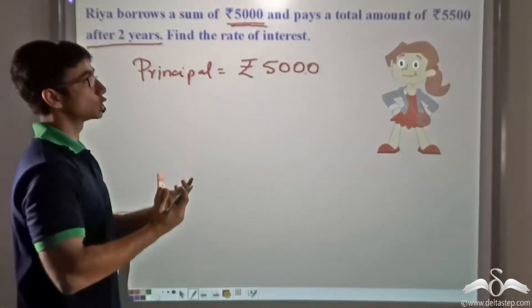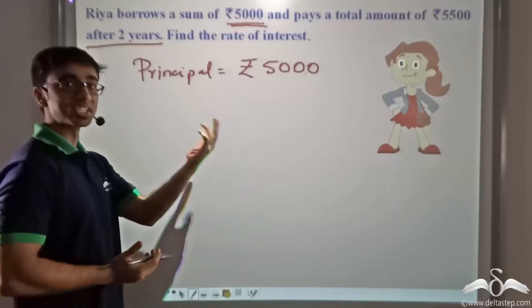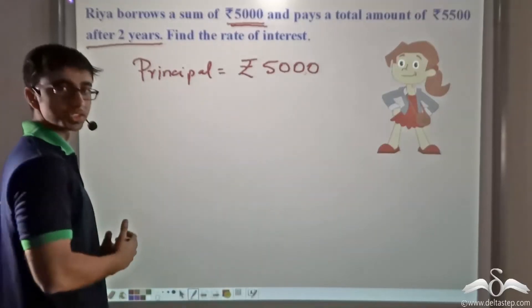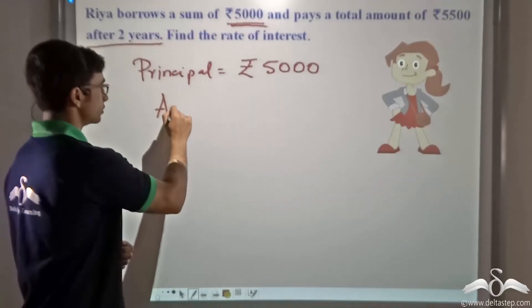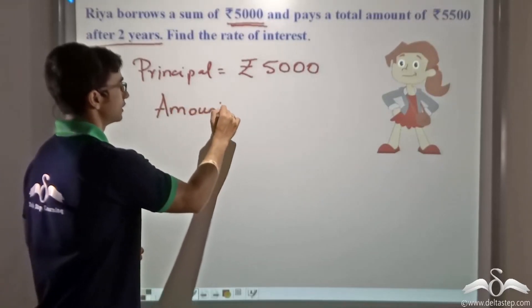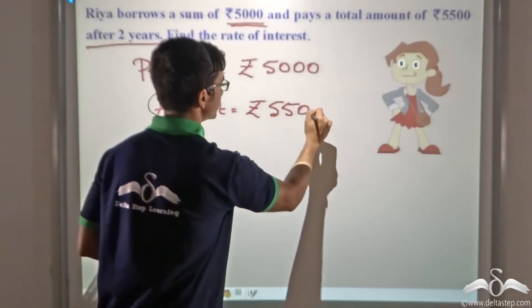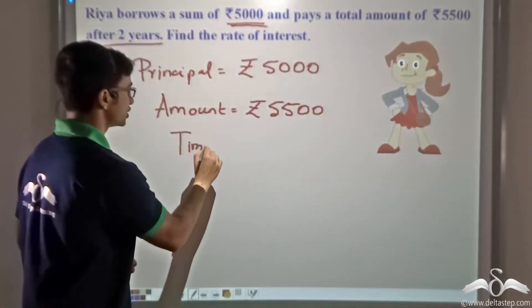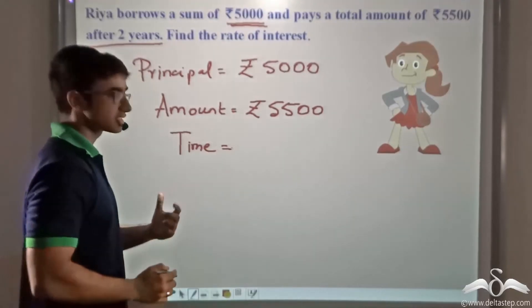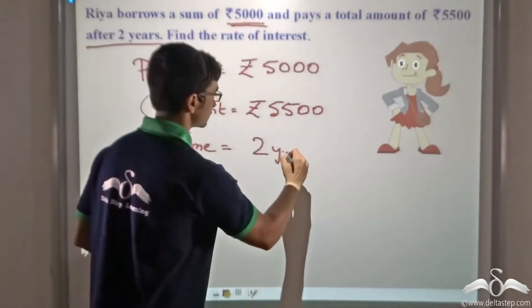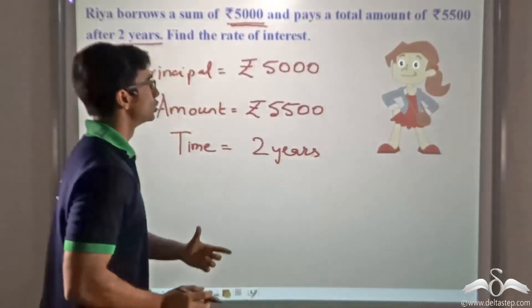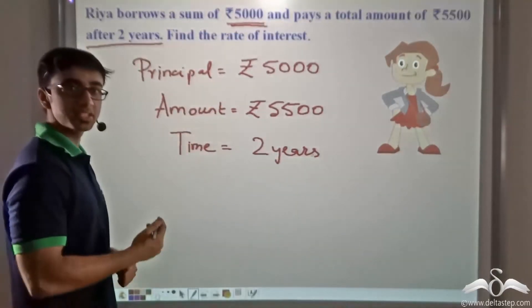We have also been given the total amount that Rhea is returning after a period of two years. So that is the amount. The amount is Rs. 5500, and the time for which she is borrowing the money is two years. So these are what we have been given.